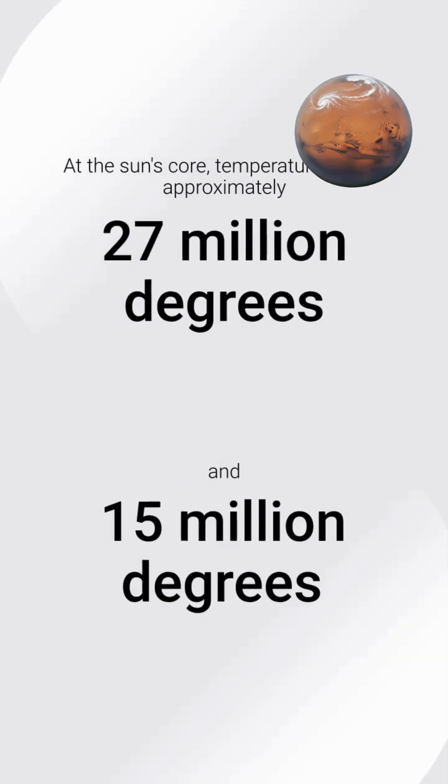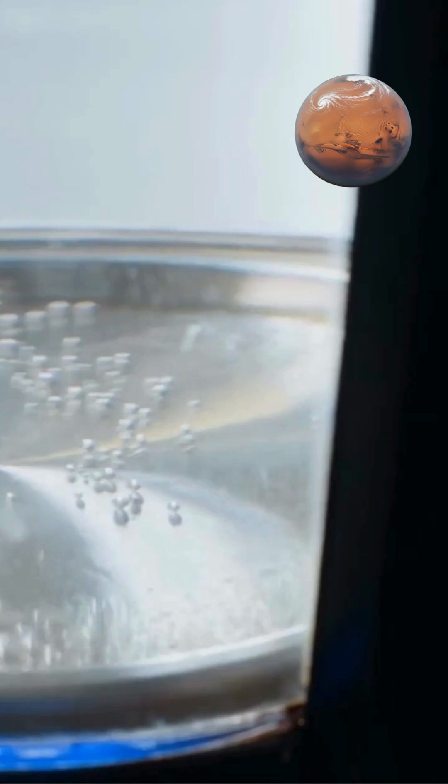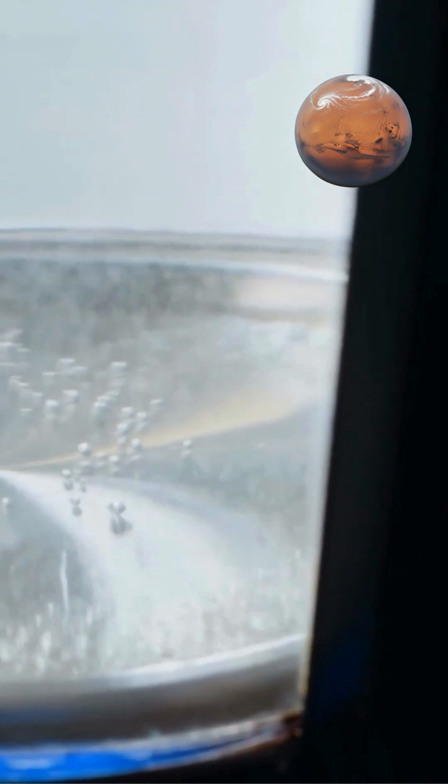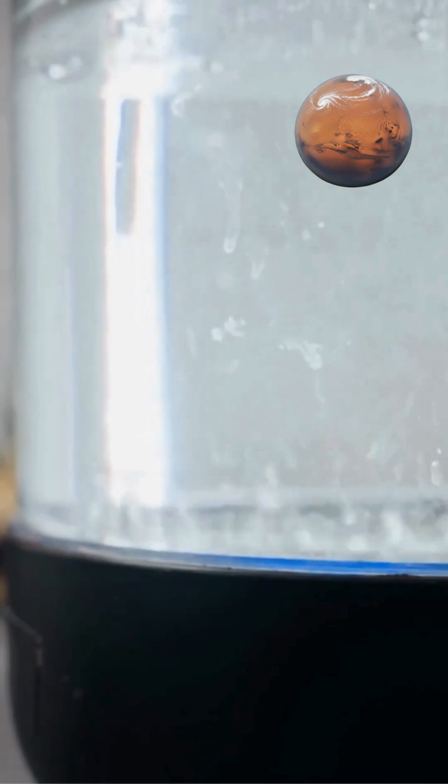At the sun's core, temperatures reach approximately 27 million degrees Fahrenheit, 15 million degrees Celsius. Under these extreme conditions, hydrogen atoms fuse together to form helium, releasing tremendous amounts of energy in the process.